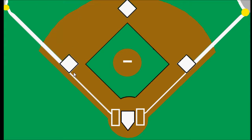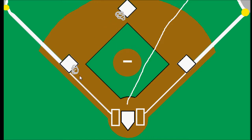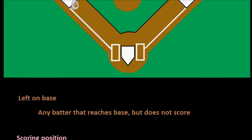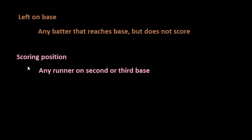Where this comes from is: if you have a runner on second or third base, these are runners who will generally be able to score on a single hit to the outfield — they will both be pretty likely to score on the play. So that's why we call this scoring position. It's even more important for a team to succeed — what they want to do is not leave a runner in scoring position.